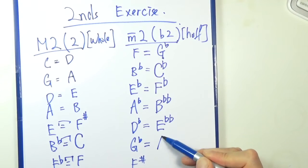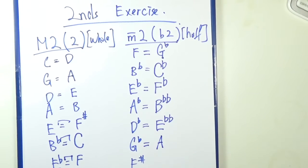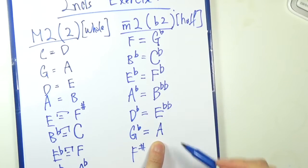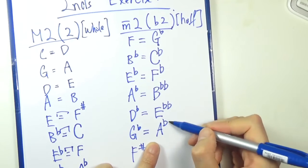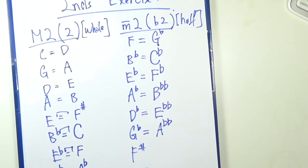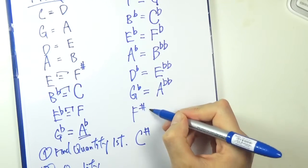Same thing here I guess. G, A, quantity first. G, A flat, that's a whole step apart. Need another flat.